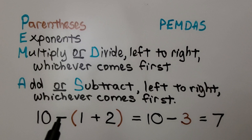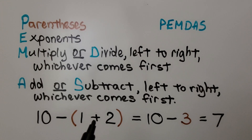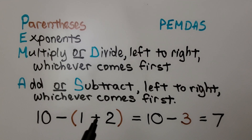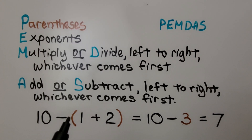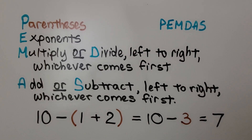So here we have 10 minus, and (1 plus 2) in parentheses. That means we need to do within the parentheses first — that's 3. So this is 10 minus 3, which equals 7.